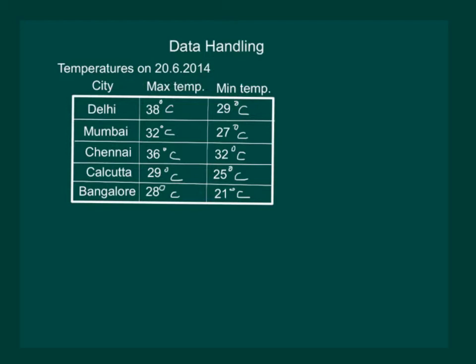And we can conclude that on 20th, Delhi was the hottest city out of the five cities. So from this example, we can see that the collection, recording and presentation of data helps us to organize our experiences and draw inferences from it.